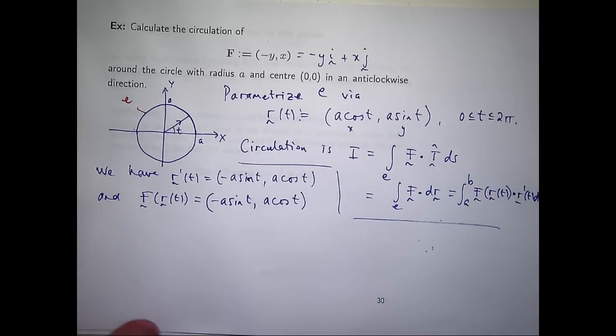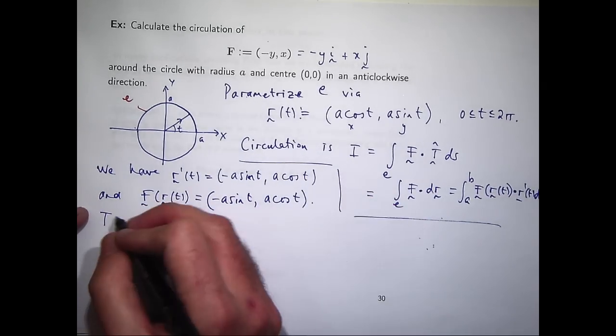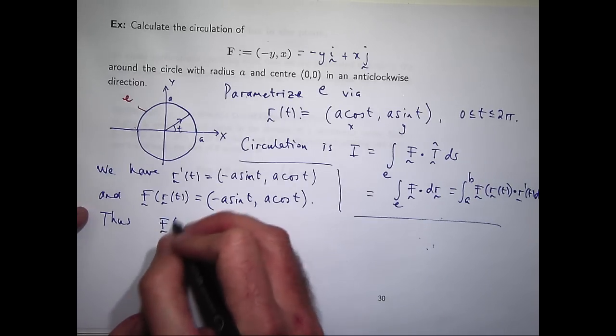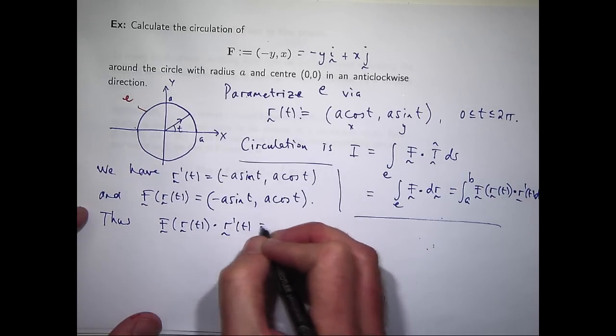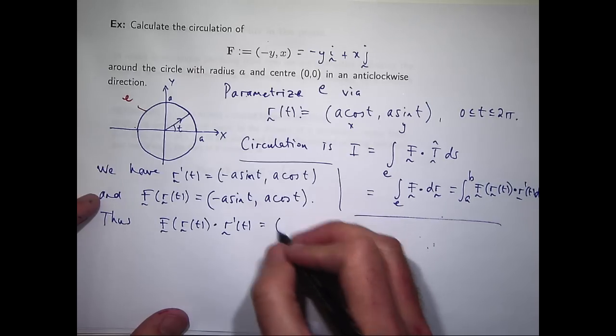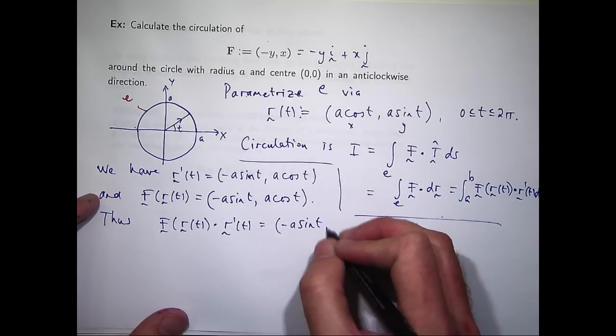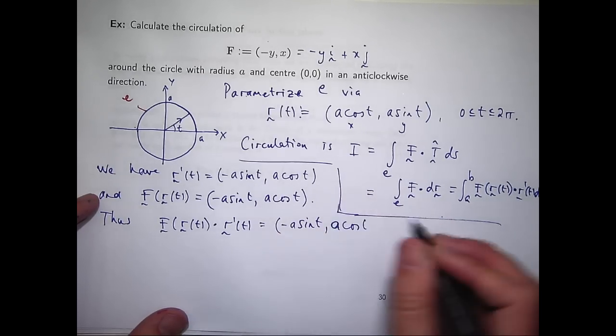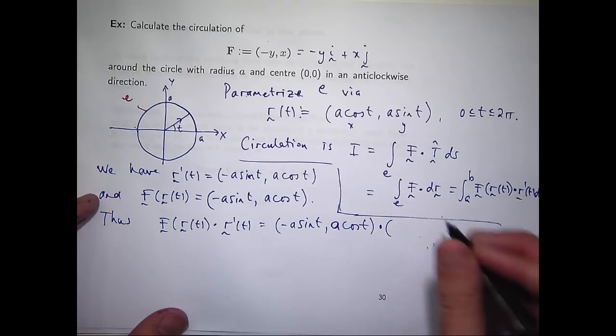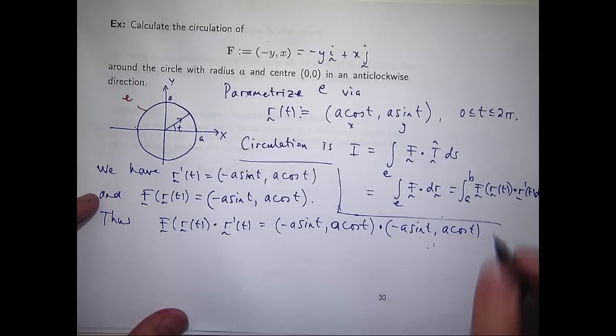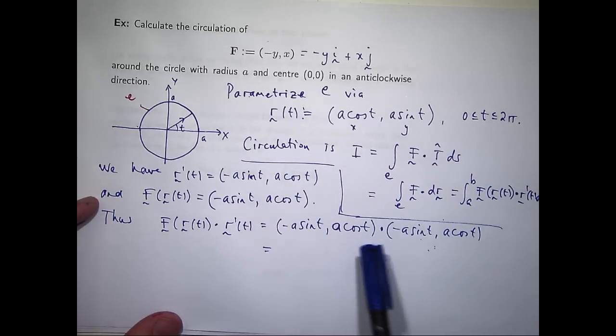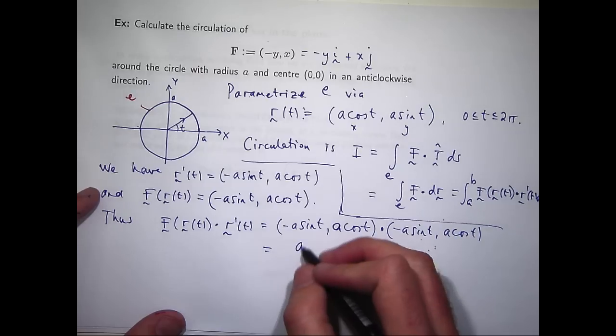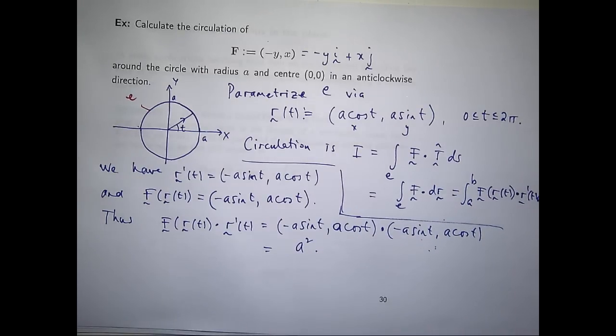So the dot product of these two things is going to be the following. It's minus a sine t, a cosine t. You can probably see that it's going to simplify very nicely. So essentially we've got the same vectors here. So I'm going to get a squared sine squared t plus a squared cosine squared t. I can use cos squared plus sine squared equals 1 to give us a squared.